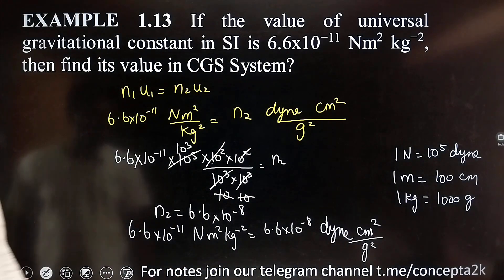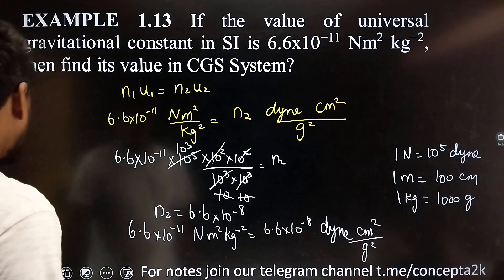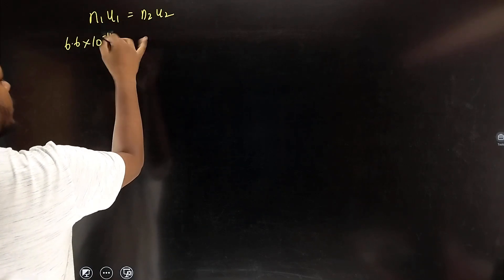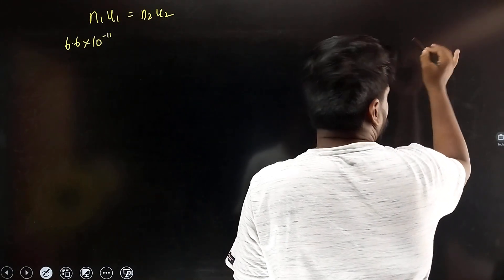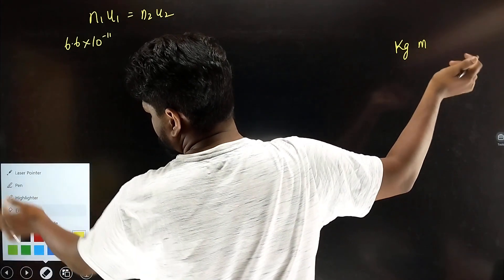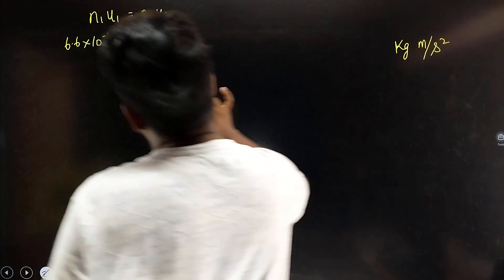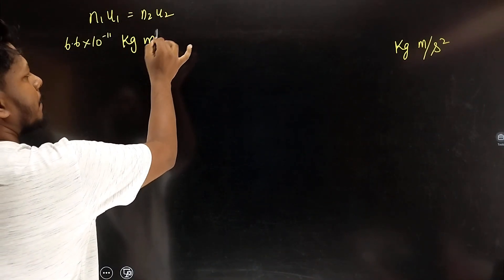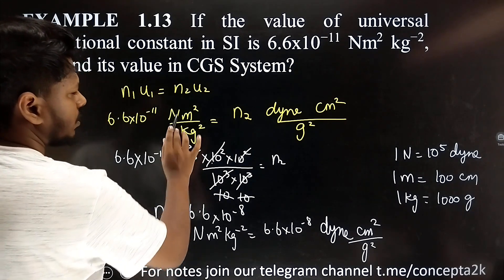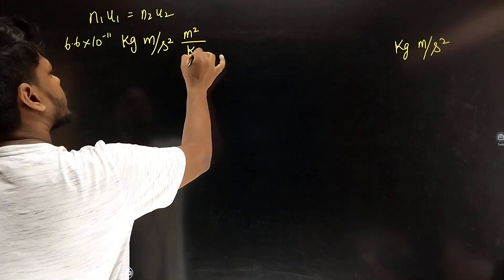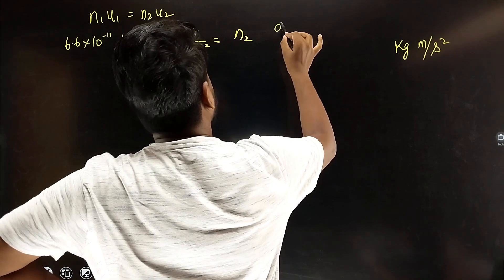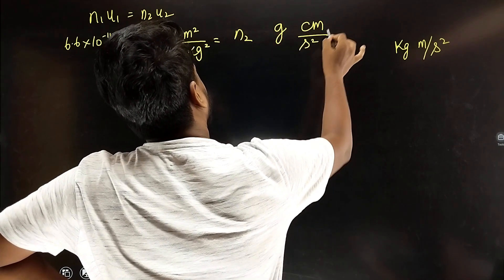To simplify: Newton equals force, which is mass into acceleration — that is kg meter per second squared. So Newton can be written as kg meter per second squared. Substituting, we get kg power, meter per second squared with the appropriate unit conversion factors.